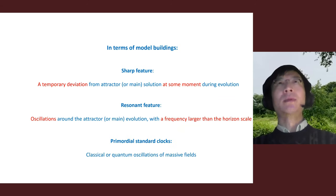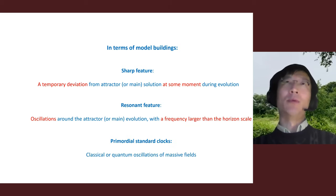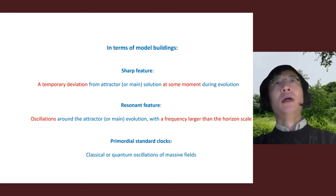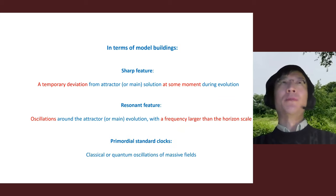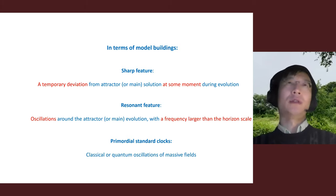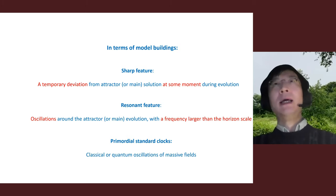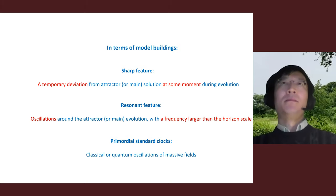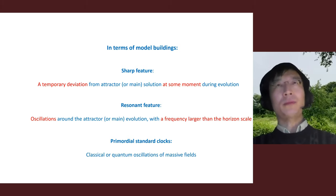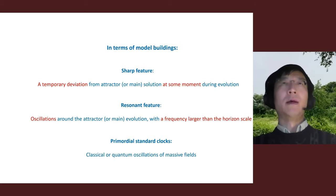In terms of model building, primordial features may be roughly categorized into two to three kinds depending on the ingredients we add to our models. A sharp feature refers to a temporary deviation from an attractor solution, or from some main solution, if a scenario doesn't have an attractor solution at some particular point in time during its evolution.